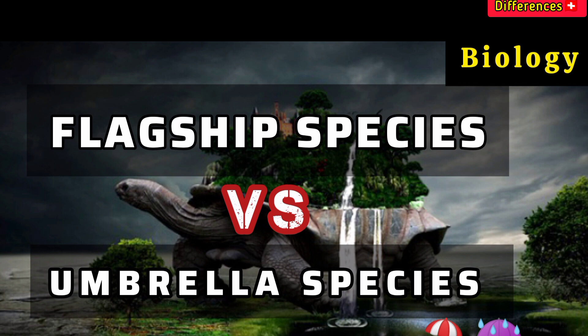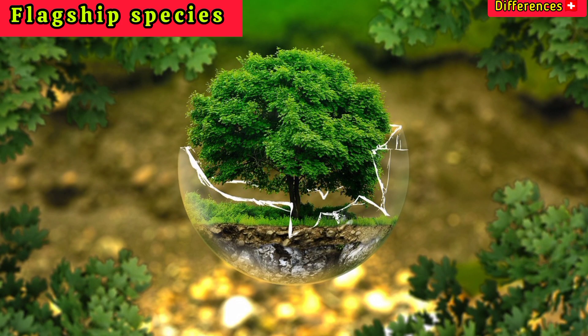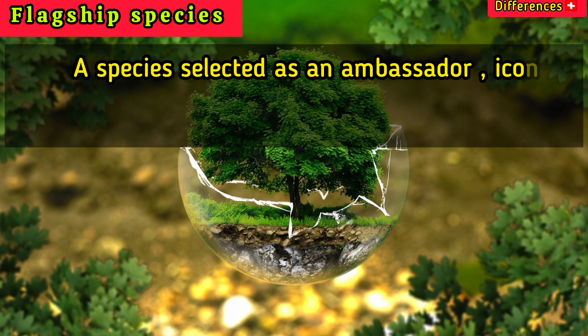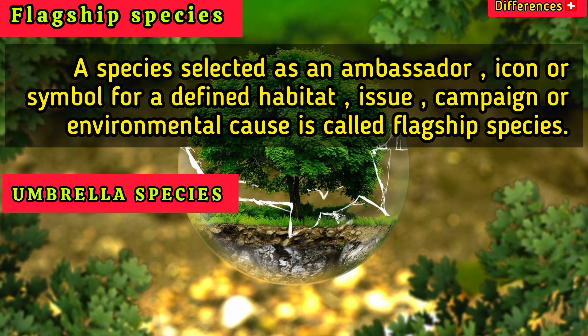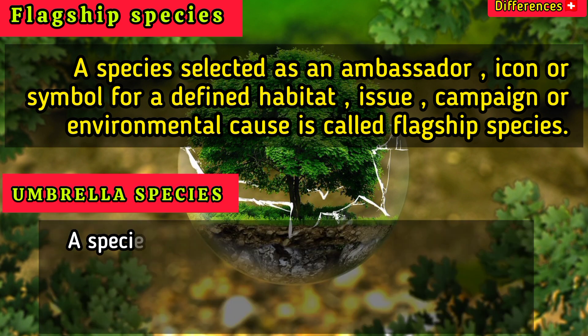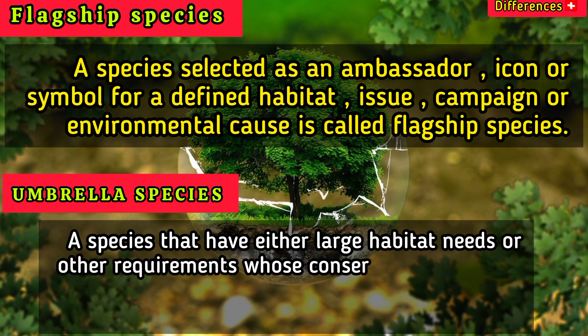This video explains the difference between flagship species versus umbrella species. A flagship species is a species selected as an ambassador, icon, or symbol for a defined habitat, issue, campaign, or environmental cause.